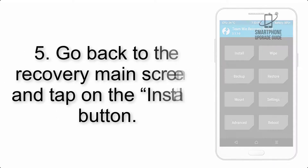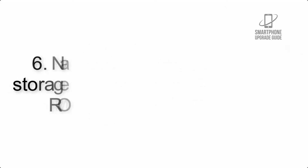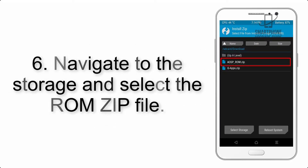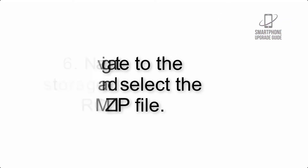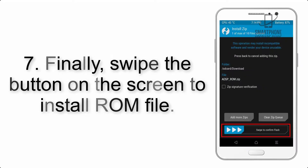Step 5: Go back to the recovery main screen and tap on the Install button. Step 6: Navigate to the storage and select the ROM zip file. Step 7: Finally, swipe the button on the screen to install the ROM file.